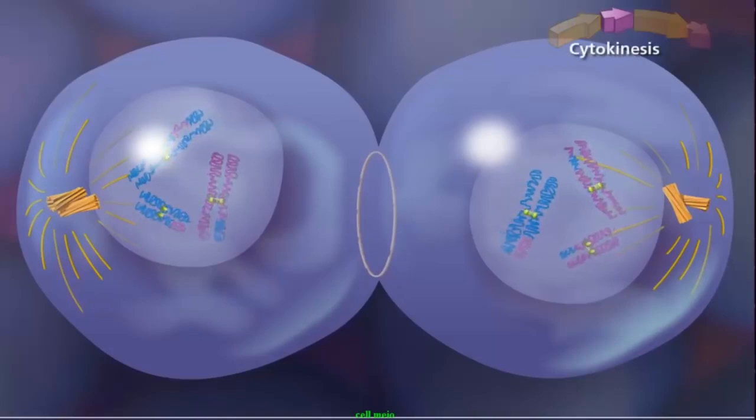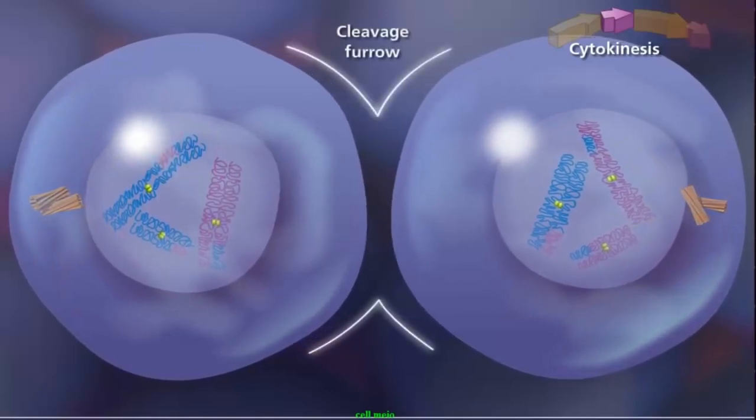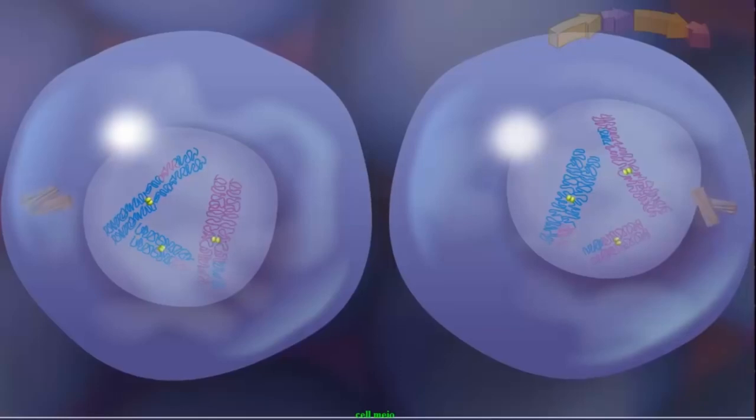Cytokinesis separates the cytoplasmic material and the two daughter cells are separated by a cleavage furrow. Since the final product of meiosis I is two haploid cells, meiosis II begins without the chromosomes going through another round of DNA replication.